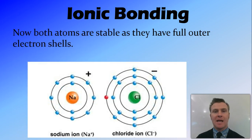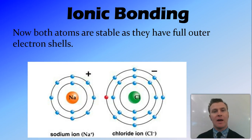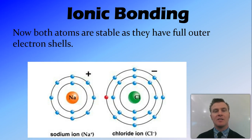Both atoms are now stable because they have a complete outer shell. Chlorine has three shells, and its outer shell now has eight electrons because it gained one extra from sodium — it had seven and received one. Sodium now has a complete second shell with eight electrons. It had one electron in its third shell, but it gave that away, so it only has two shells and is stable.